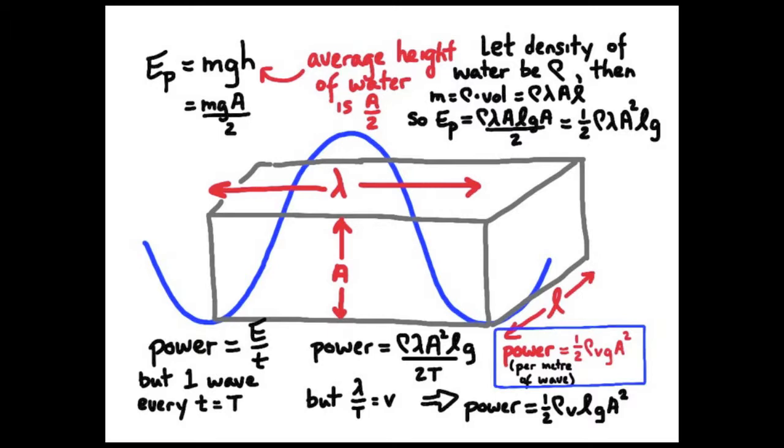Notice also that the power of the wave is directly proportional to the square of the amplitude. This is consistent with any intensity wave function. Brightness for light, directly proportional to the square of the amplitude. Same with water waves.